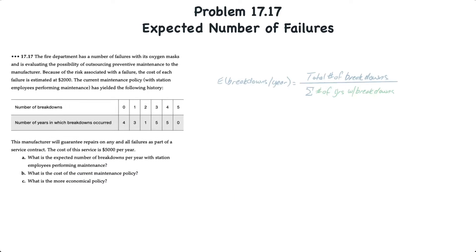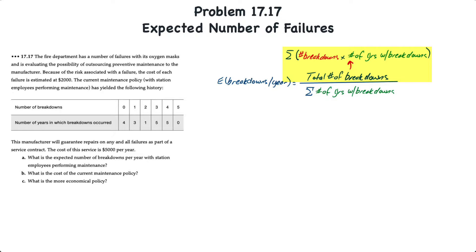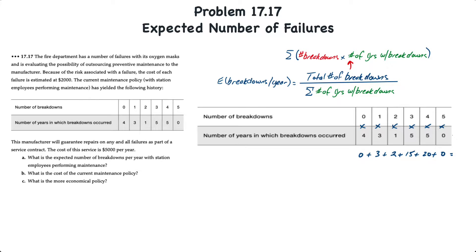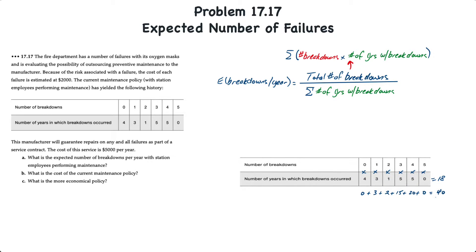For requirement A, the estimated breakdowns per year equals the total number of breakdowns divided by the total number of years. Using the table: 0×4 = 0, 1×3 = 3, 2×1 = 2, 3×5 = 15, 4×5 = 20, and 5×0 = 0. The total number of breakdowns is 40 over 18 years, resulting in 2.222 breakdowns per year.